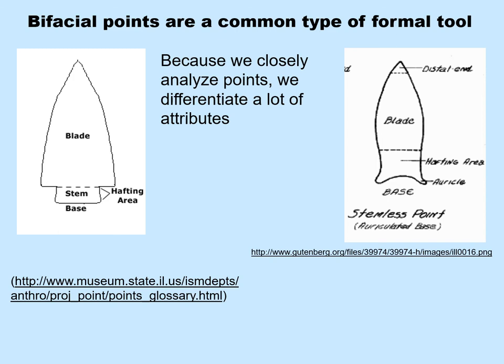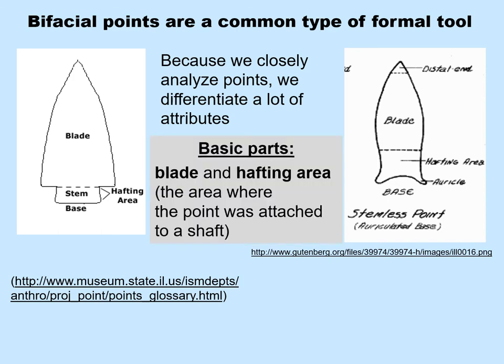Because we closely analyze points, we differentiate a lot of attributes. To begin with, bifacial points can be divided into two basic parts: the blade and the hafting area. When you have a stem, the hafting area is quite obvious, as you see on the left. But even when you don't have a stem, there is still a hafting area where the point was attached to a shaft.